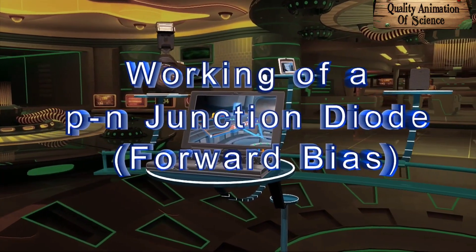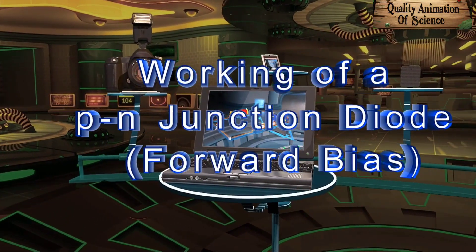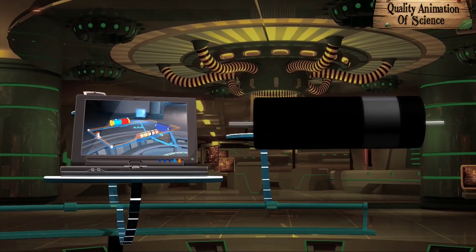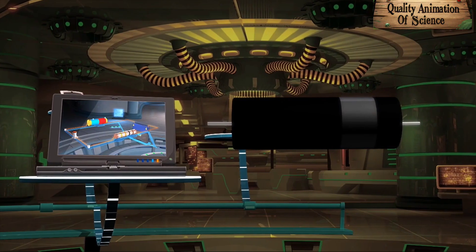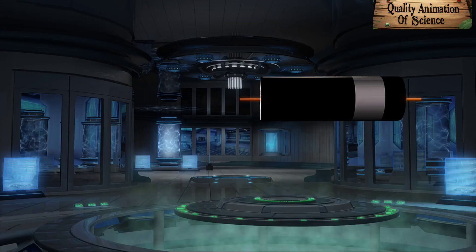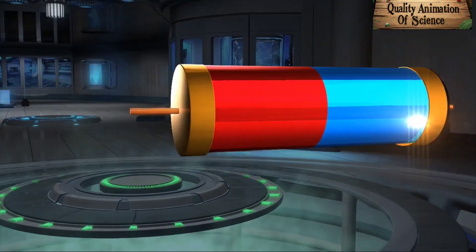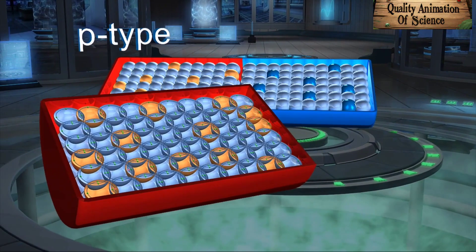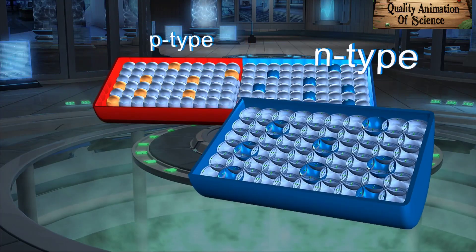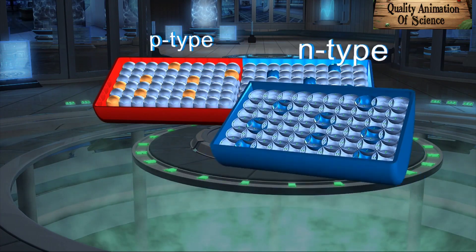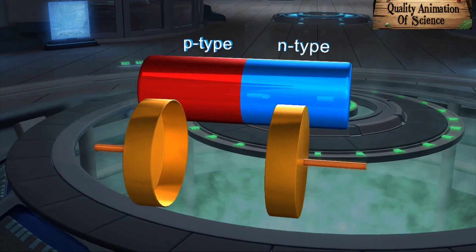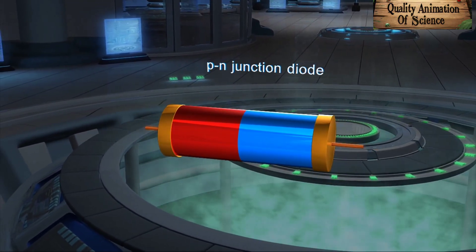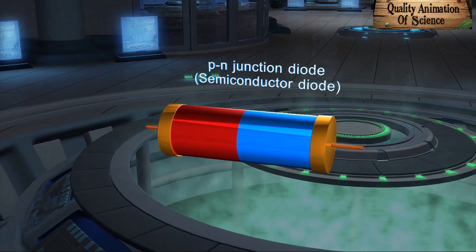Working of a P-N Junction Diode under Forward Bias. The heart of most electronic devices is a P-N junction diode. Previously, we have seen how a P-N junction consists of a P-type and N-type semiconductor. A P-N junction with two metallic contacts is known as a P-N junction diode, commonly called a semiconductor diode.